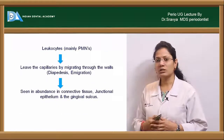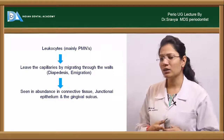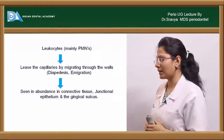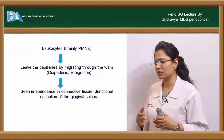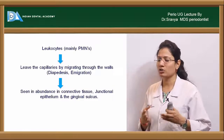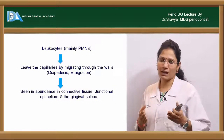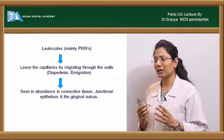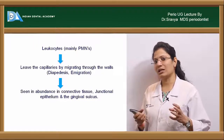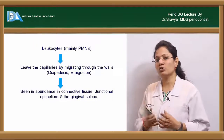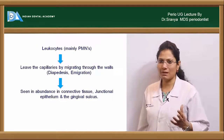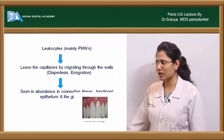The leukocytes slowly start migrating — they leave the capillaries and start migrating through the vessel walls through a process of diapedesis. They then accumulate and are seen in abundance in the connective tissue, junctional epithelium, and gingival sulcus.